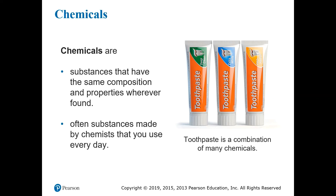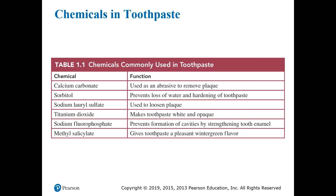Sometimes in pop culture or news media, the word chemical is loaded with negative connotations or even used to outright scare you. But it's important to keep in mind that almost every substance you interact with on a daily basis is a chemical or is made up of chemicals — this includes wood, plastic, cotton, metals, and even water. This picture shows some tubes of toothpaste, which are all made up of different combinations of chemicals. Here we can see a table showing some of the chemicals in a typical tube of toothpaste: things like calcium carbonate, sorbitol, sodium lauryl sulfate, titanium dioxide, sodium fluorophosphate, and methyl salicylate. Some of them have rather complicated or scary-sounding names, but many of these things are completely harmless — some are found in everyday items like eggshells or wintergreen plants.